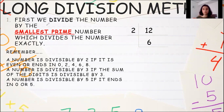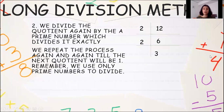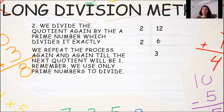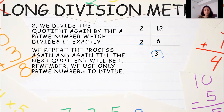Now for step 2: our new quotient has become 6 because we divided 12 by 2 to get 6. So we divide the quotient again by a prime number which divides it exactly. Just as we did with 12, we do the same with 6. The smallest prime number that divides 6 exactly is 2. So we write 6 on the right-hand side and 2 on the left-hand side. Then 6 divided by 2 gives us 3, so 3 becomes our new quotient. We repeat the process again and again until the next quotient is 1.